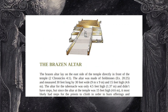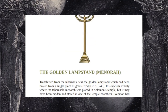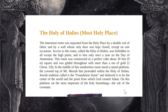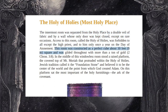Continuing on with his book, here he has the brazen altar outside — his depiction has a long stretch of stairs as opposed to the earlier one with a ziggurat-style spiraling staircase. Here's the bronze sea. I want to hit this section on the Holy of Holies. He writes: 'The innermost room was separated from the holy place by a double veil of fabric and by a wall whose only door was kept closed except on rare occasions. Access to this room — called the Holy of Holies — was forbidden to all except the high priest, and to him only once a year on the Day of Atonement. This room was constructed as a perfect cube, about 30 feet square, and was gilded throughout with more than a ton of gold.'